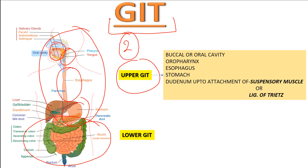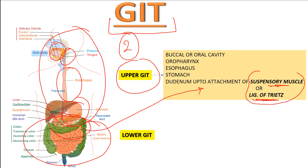The upper GI tract also includes the stomach and the part of the duodenum up to the attachment of the suspensory muscle of the duodenum, also called the ligament of Treitz. For a detailed discussion of the suspensory muscle of the duodenum and this ligament, please watch my separate dedicated video on this topic.